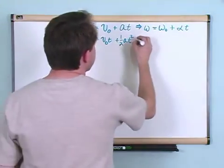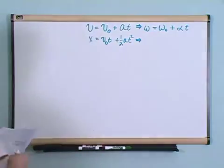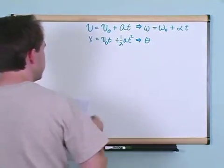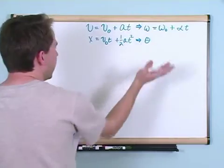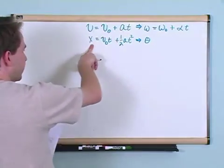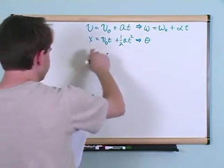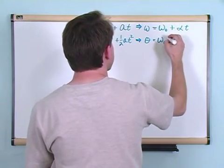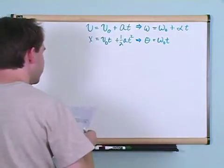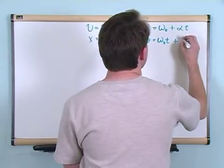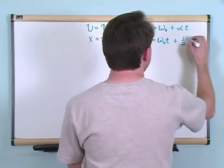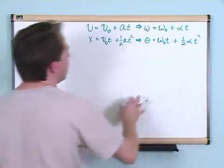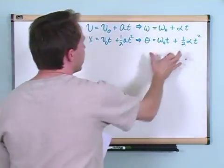The analog here in a rotational system is that theta, which is just the angular position, similar to this position here, is equal to the initial angular speed times the time, plus one half times the angular acceleration times t squared. And again, looking at this equation and this equation, they are the same.